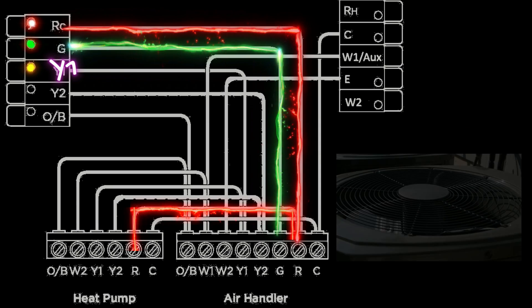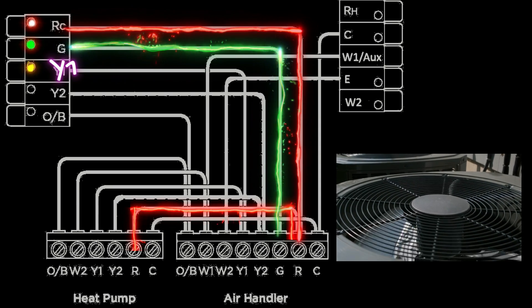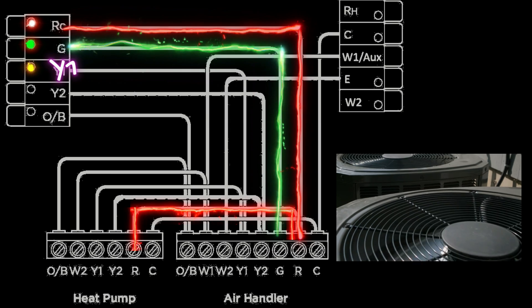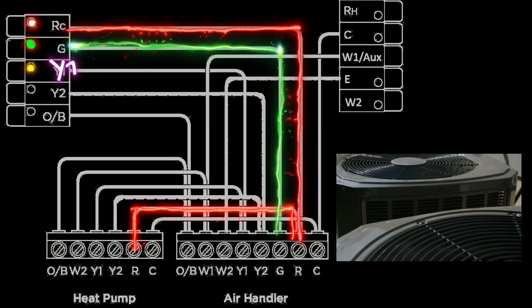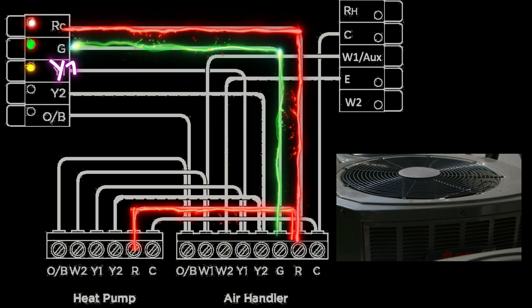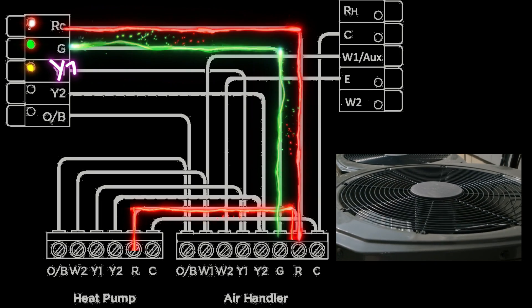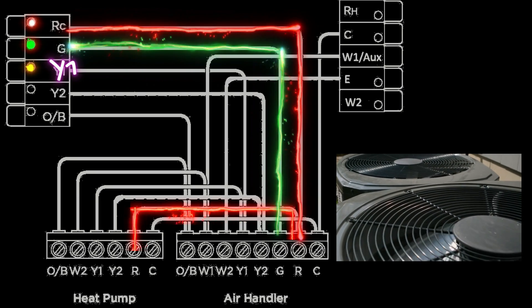It's better to think of the Y terminal as the terminal that turns the outdoor unit on and off. Now the reason why a lot of people think it's for cooling is because in a straight air conditioning system that is the only time you're turning on the outdoor unit, in cooling mode.